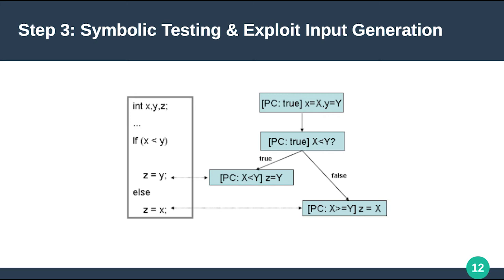The exploit generation system operates based on the Z3 SMT solver. We model the exploitable path as a logical formula and send it to the Z3 solver, which executes the path symbolically and collects a set of path constraints to deliver values — which we call payloads for our exploit. The outcome of this modeling is actual practical exploits to trigger vulnerabilities or zero-day vulnerabilities inside target EVM bytecode or smart contract binaries.